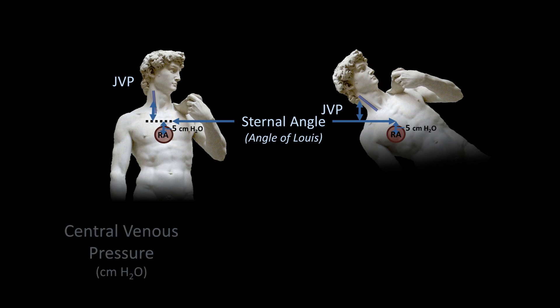So the central venous pressure in centimeters of water equals the vertical height of the JVP above the sternal angle, plus 5 cm. This central venous pressure is a key physiologic parameter that provides insight into whether a patient is dehydrated, in which JVP is unusually low, or in heart failure, in which JVP is unusually high.